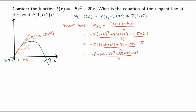Now there are simplifications: -5 + 20 - 15 goes to 0. What remains is -5h² + 10h, all divided by h. Since h ≠ 0, I can divide numerator and denominator by h, and the slope of the secant line equals -5h + 10.